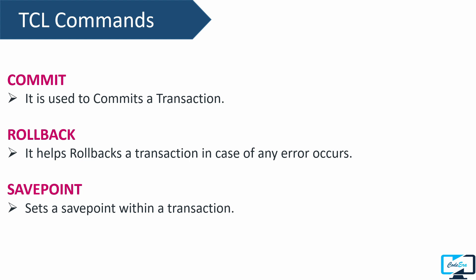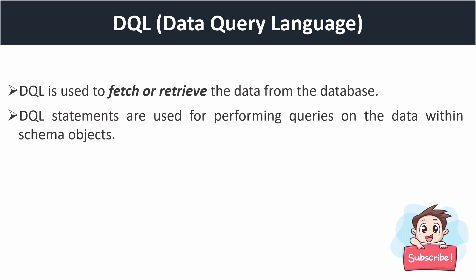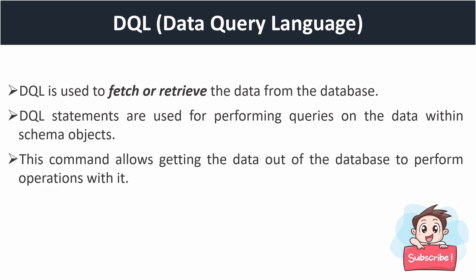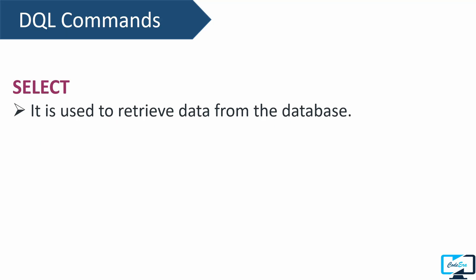Now let's discuss the last category, DQL or Data Query Language. We use DQL commands to retrieve data from the database. This is the most important command because in interviews at different companies you will face this command frequently. This command only gets data out of the database so that we can perform required operations on it. In DQL there is only one command: SELECT. By using the SELECT command you can retrieve data from the database. These are all five categories of SQL commands.